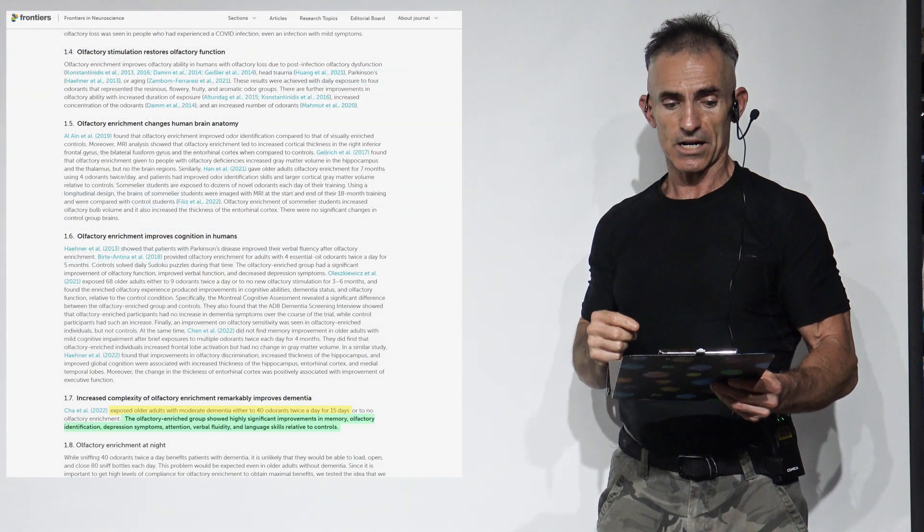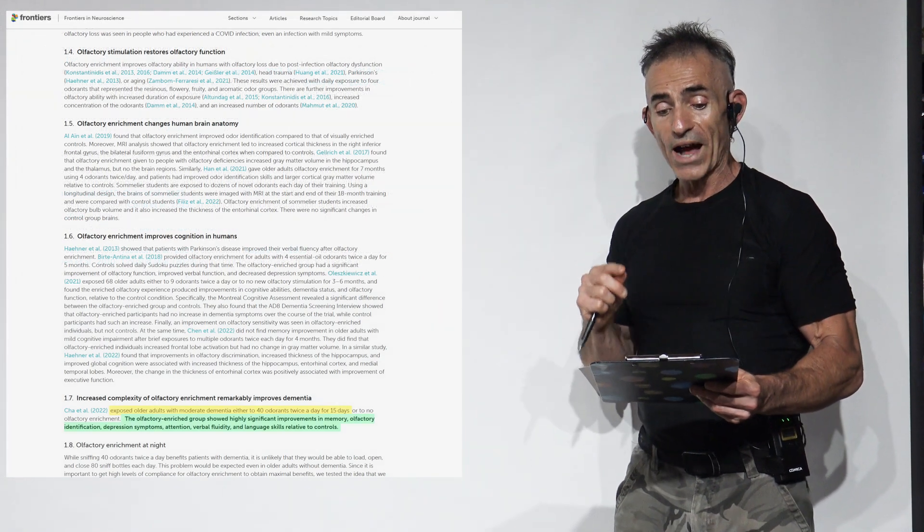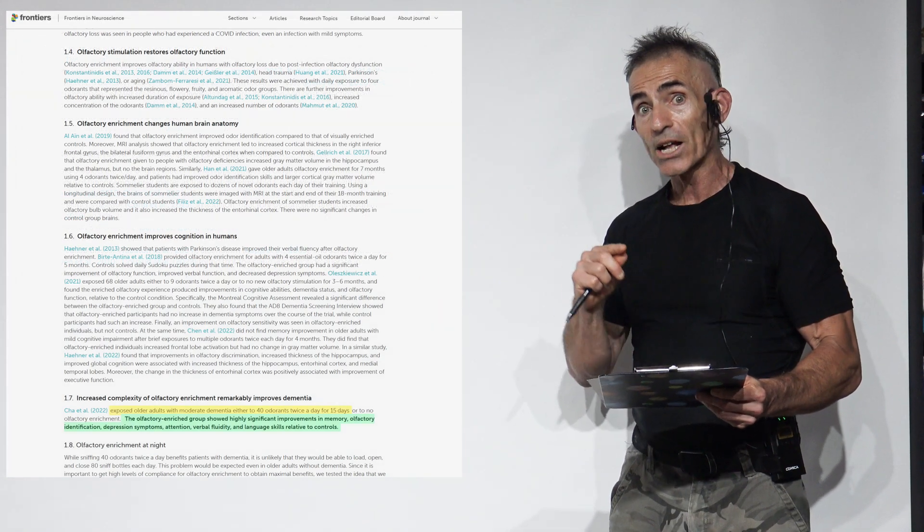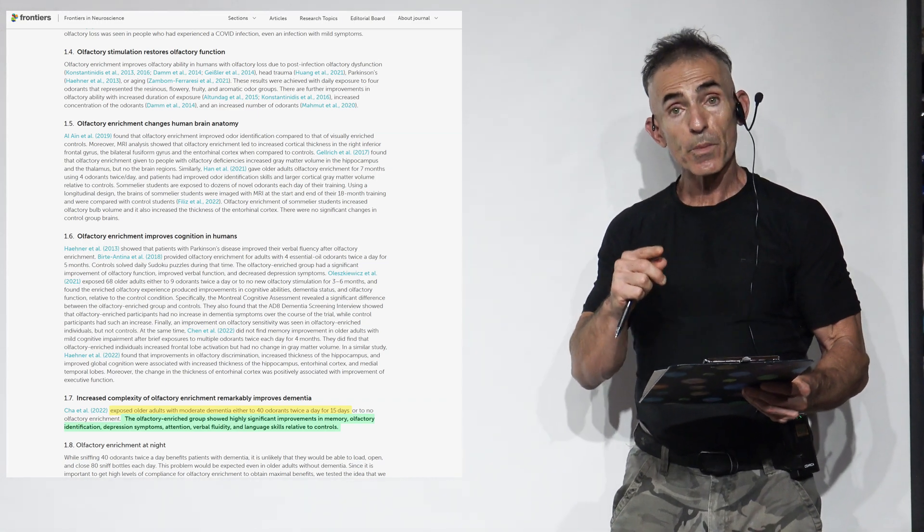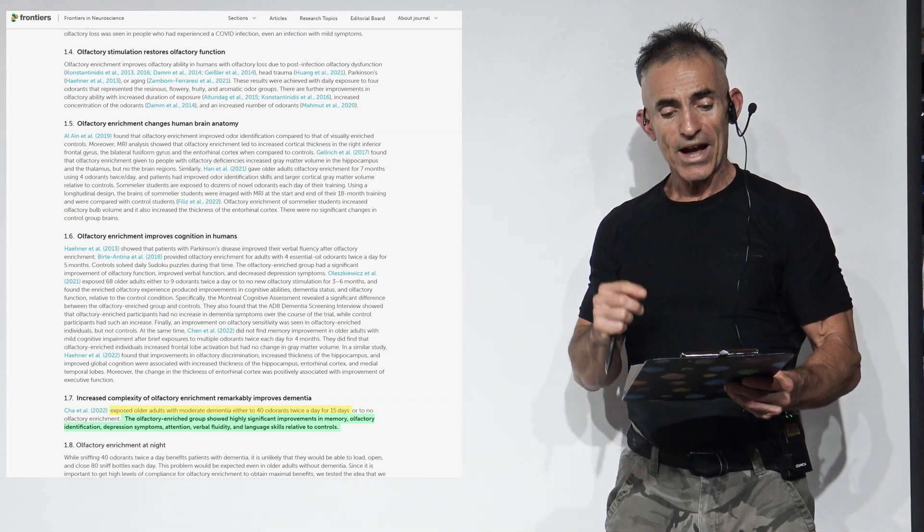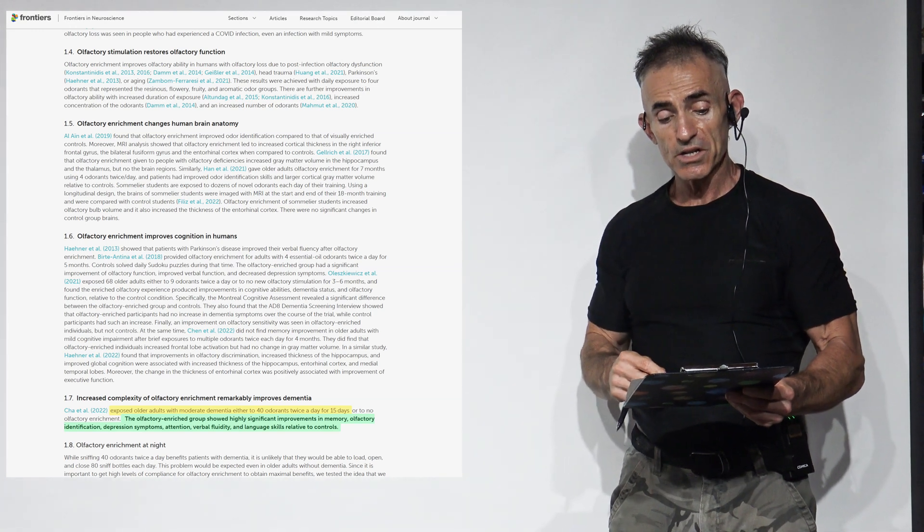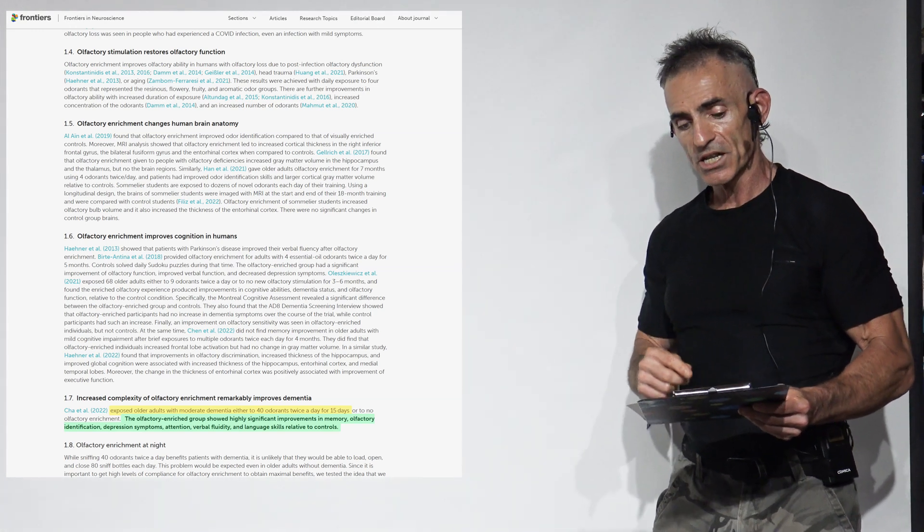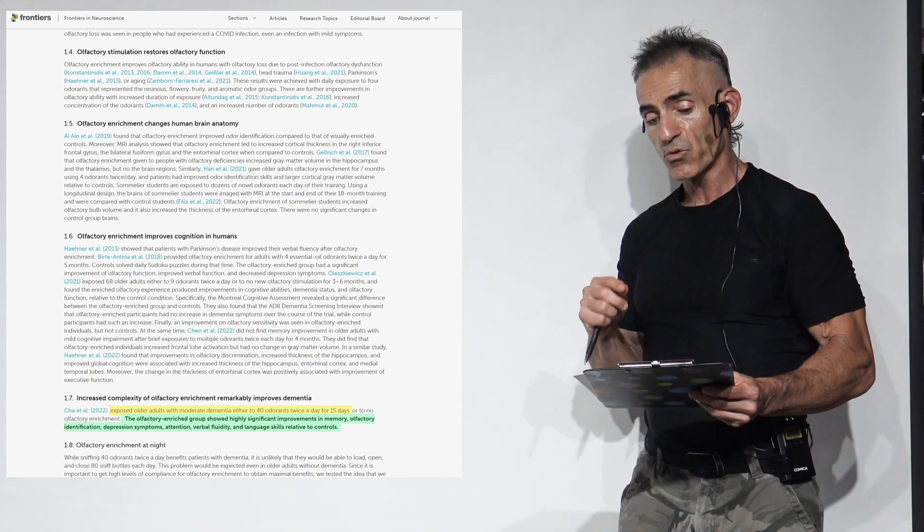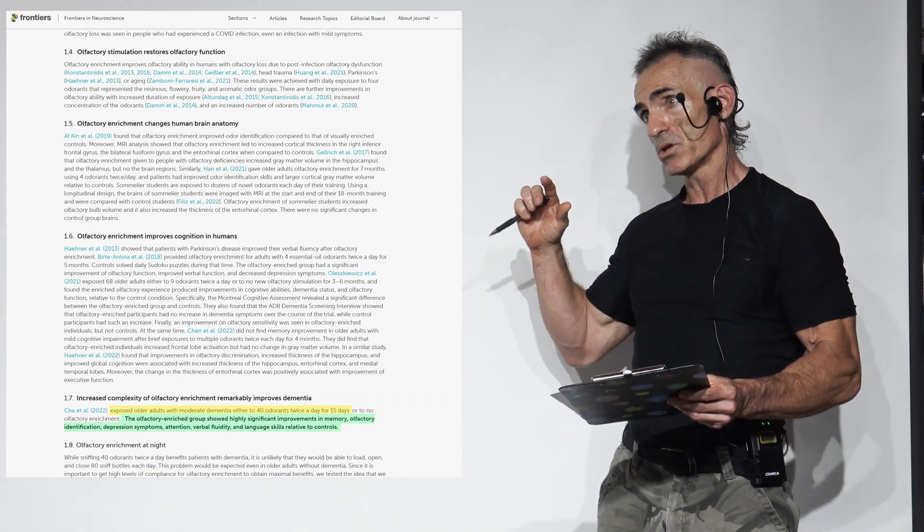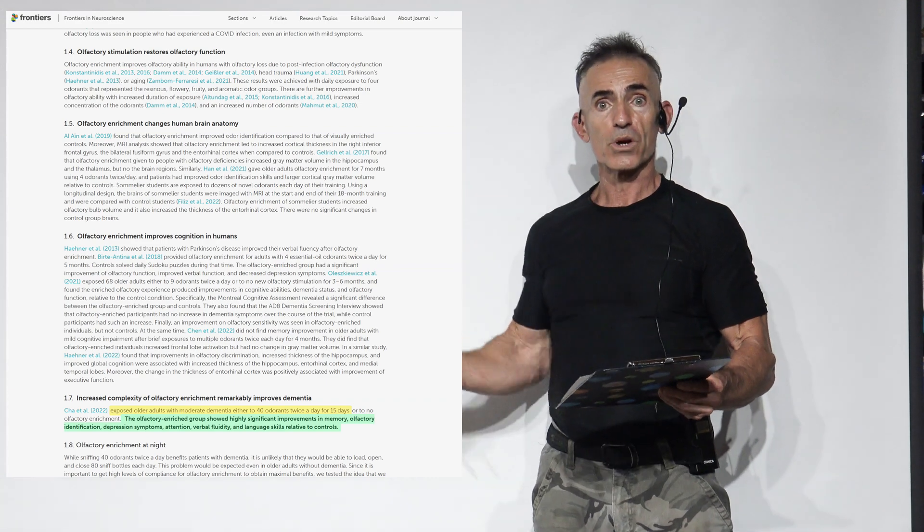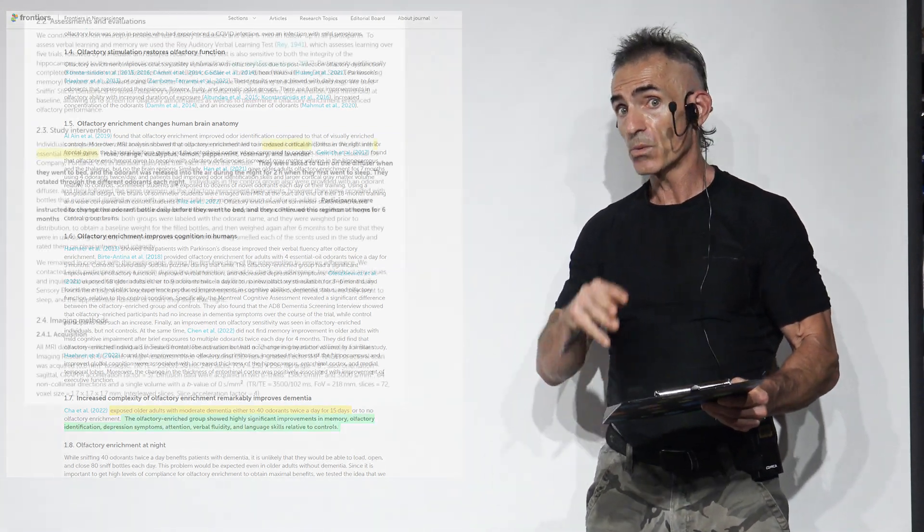Olfactory stimulation restores olfactory function. Olfactory enrichment changes human brain anatomy, improves cognition in humans, and the increased complexity of olfactory enrichment remarkably improves dementia. That's going to reference the study with 40 different odors, but in this case we're only dealing with seven.